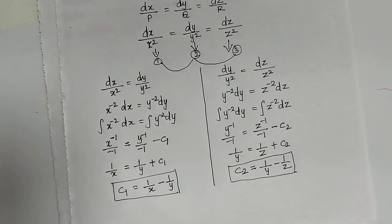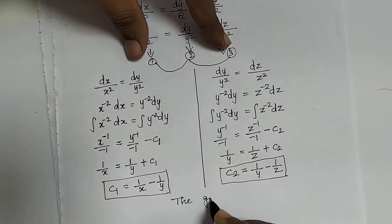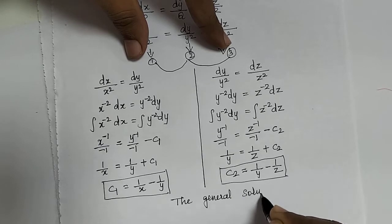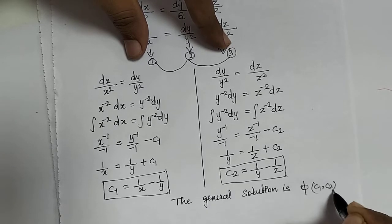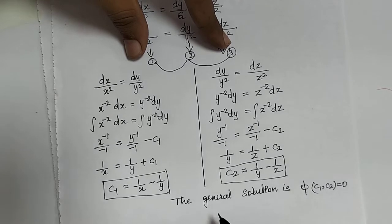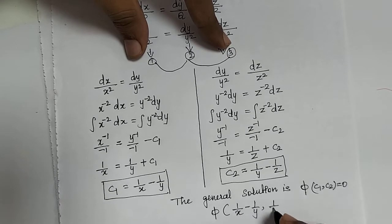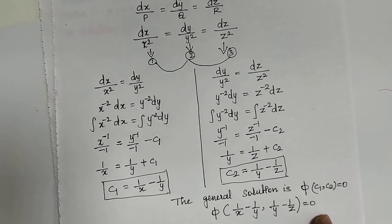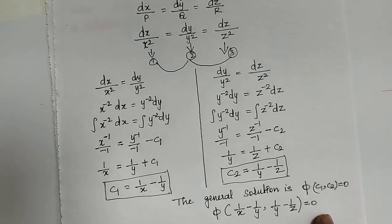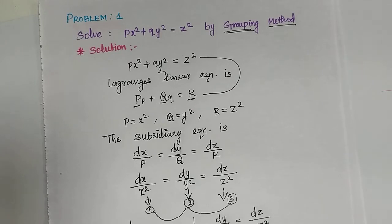We now have both c1 and c2, so there is no need to take any further groupings. Writing the general solution as phi of (c1, c2) equals 0, the final answer is: phi of (1/x minus 1/y, 1/y minus 1/z) equals 0. This completes solving px-squared plus qy-squared equals z-squared by the grouping method.